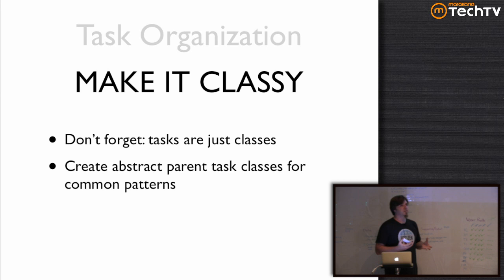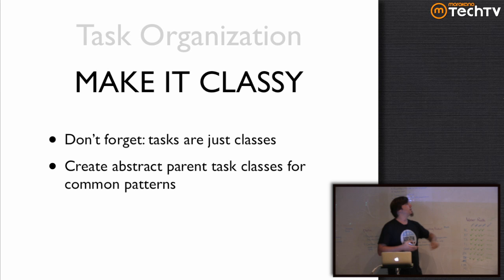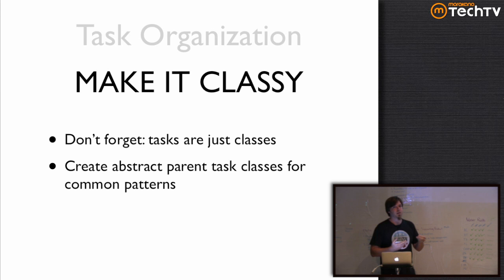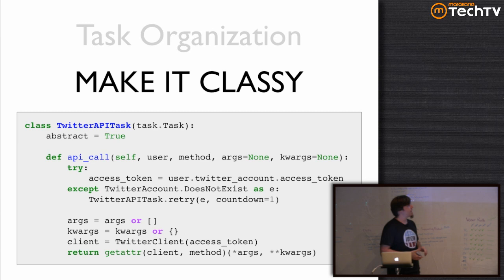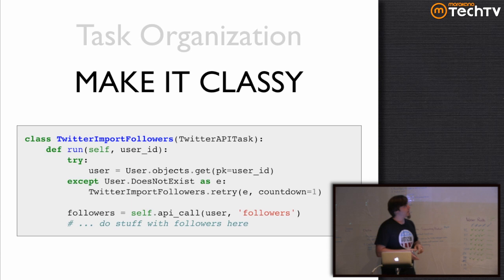As much as Celery tries to hide it from you on the surface, tasks are classes. You may define a function, but as soon as you decorate that function you've made it into an instance of a subclass of Task. So tasks are just classes — don't be afraid to subclass them yourself and make abstract parent task classes to encapsulate common functionality. So if you take a task that does a lot of boilerplate stuff you'll find you're doing over and over again between different API calls — to Twitter, for instance — you can make an abstract task base class, wrap all that functionality up in an API call function, and then make subclasses that take away all that boilerplate and just use that API call function over and over again. That has other benefits we'll cover later.